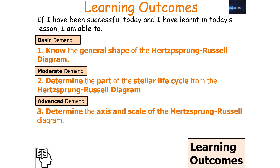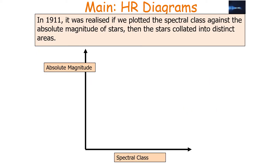If we've been successful in today's lesson, we should be able to know the general shape of the Hertzsprung-Russell diagram, determine the part of the stellar life cycle from the Hertzsprung-Russell diagram, and determine the axis and the scale of a Hertzsprung-Russell diagram.